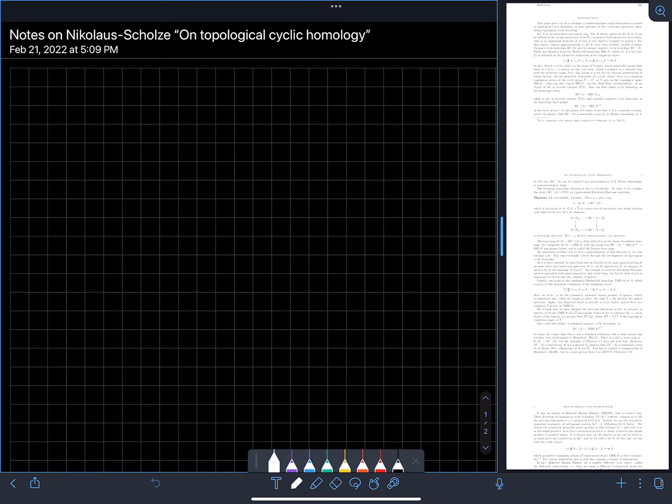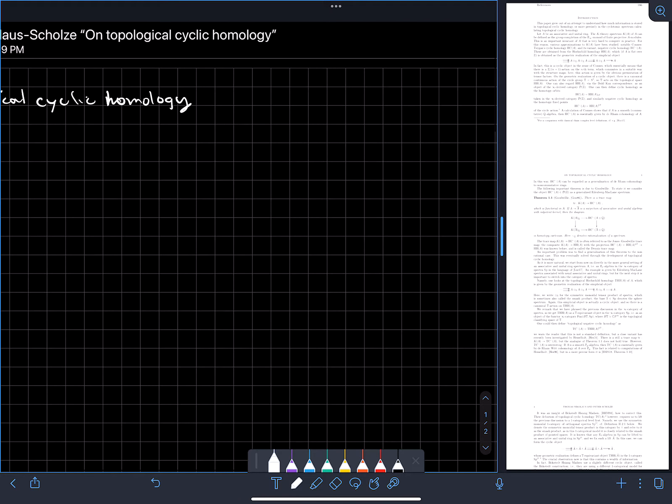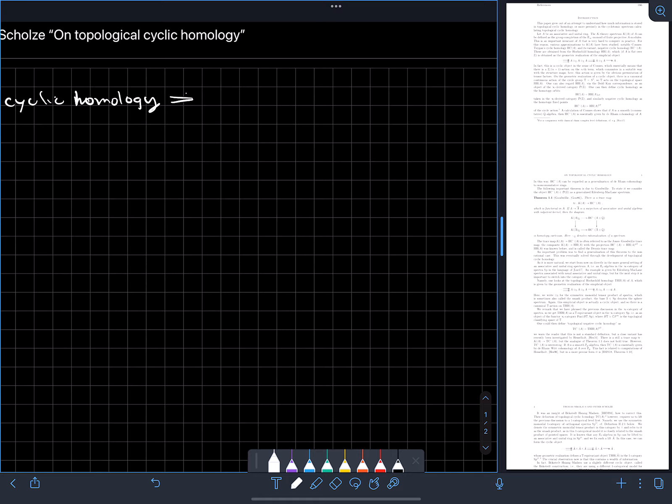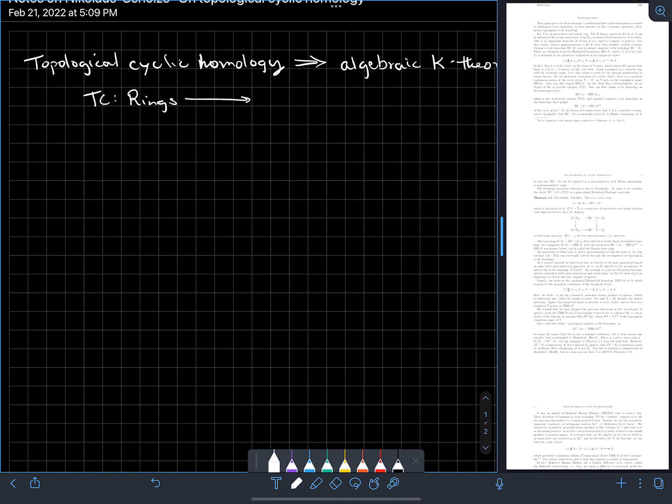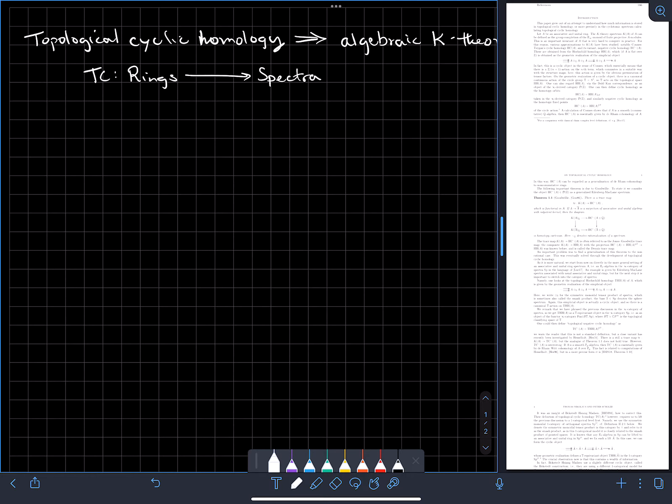The theory of topological cyclic homology is really important in computations in algebraic K-theory. So at its most basic, TC is a functor from some category of rings, say associative unital, to category of spectra.